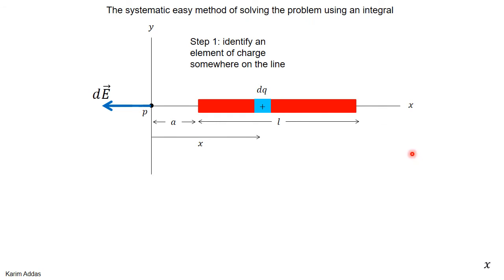The first step: identify an element of charge dq somewhere on the line — this blue part. Don't take it to be at the beginning or the end. If you take it at the beginning, the distance to point P is a; at the end it would be a plus l. Instead, take it to be anywhere in between and define the distance between point P and the element to be x.